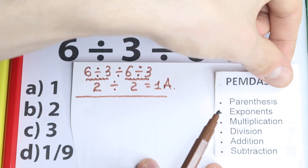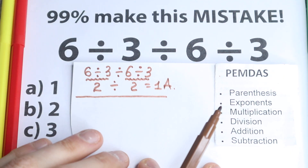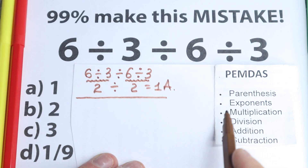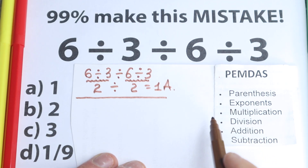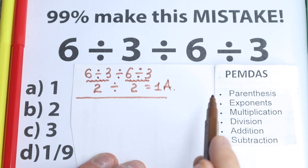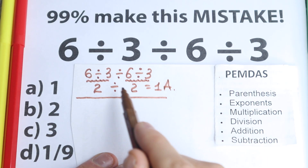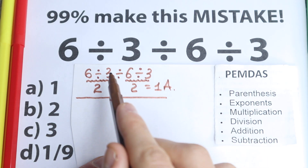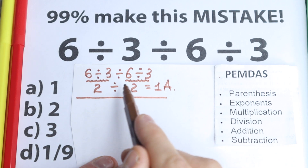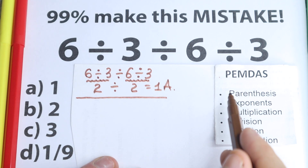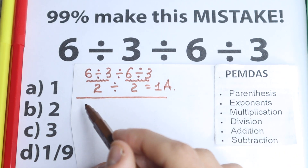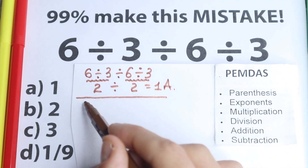Let's look at the PEMDAS order of operations. This is the most popular order of operations in the world. All internet libraries and scientific graphing calculators work according to PEMDAS. So let's solve this question according to the order of operations, because right here we just jumped from left to right and got option A — but let's solve it correctly.